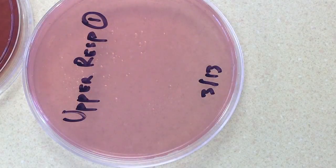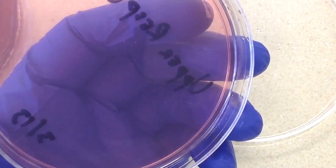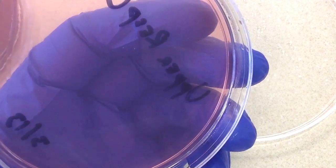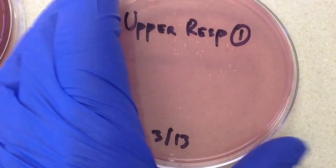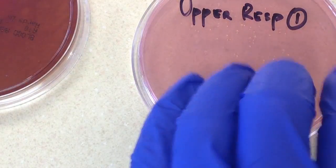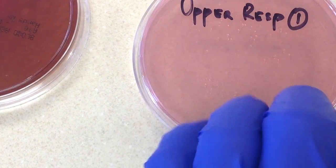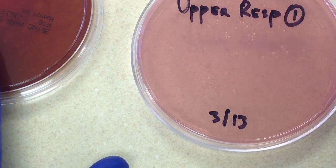Let's look at our last plate, our MacConkey's plate. It has no growth on it. So even though I didn't list any members of Enterobacteriaceae or Pseudomonas as pathogens from this culture type, there's no growth on it, so we can rule out all of those types of organisms.